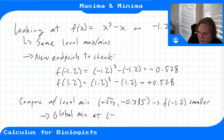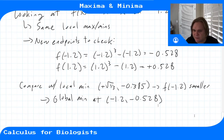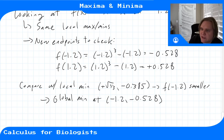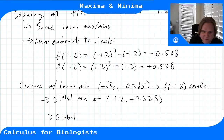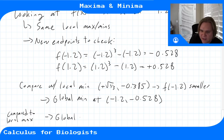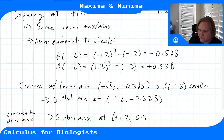Similarly, the local max had value ≈ +0.385, but f(1.2) = +0.528 is larger, so the global maximum is at (1.2, 0.528).